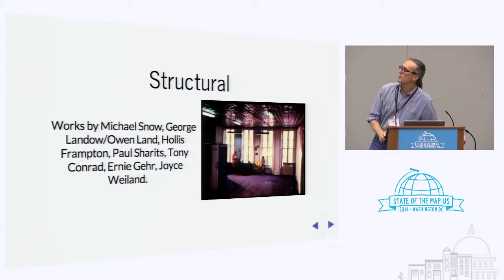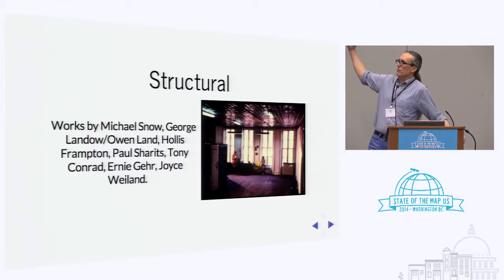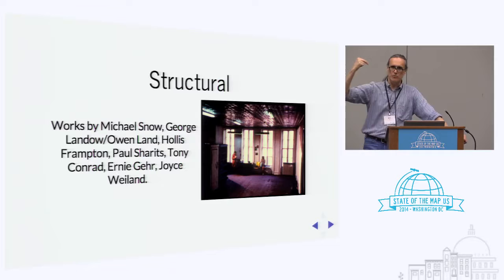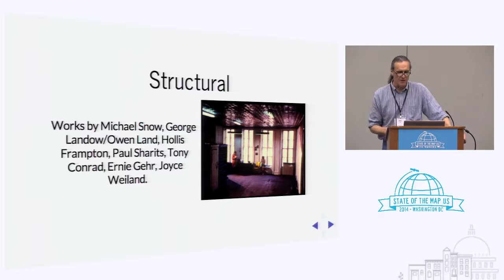One film you might have seen is 'Wavelength' by Canadian artist Michael Snow. Basically it's a 30-to-40-minute film where the camera is set up on a tripod on one end of an artist's loft and over time it slowly zooms to the far wall, where there are some photographs, and comes to rest on a photograph of the ocean. The whole journey is through a three-dimensional space that gets flattened into a photograph but then opens up into an ocean. There is some drama — people move furniture, somebody dies off screen — but mostly it's about traversal across space.